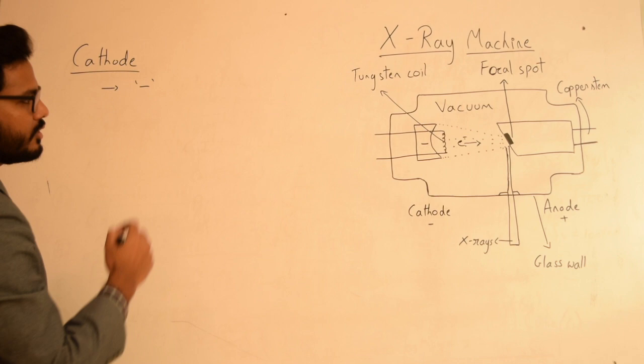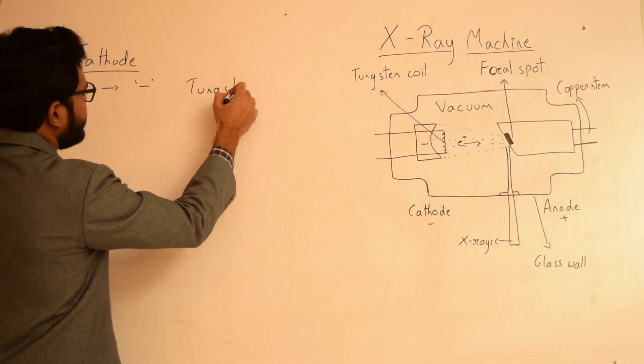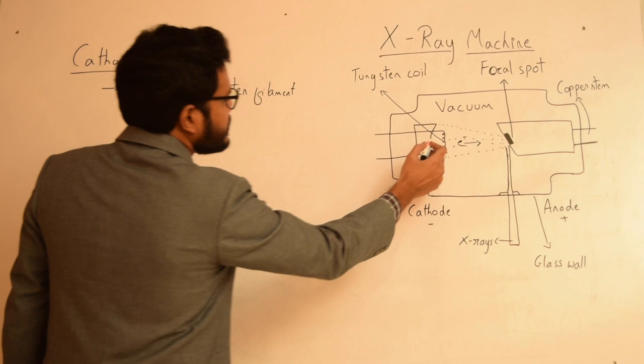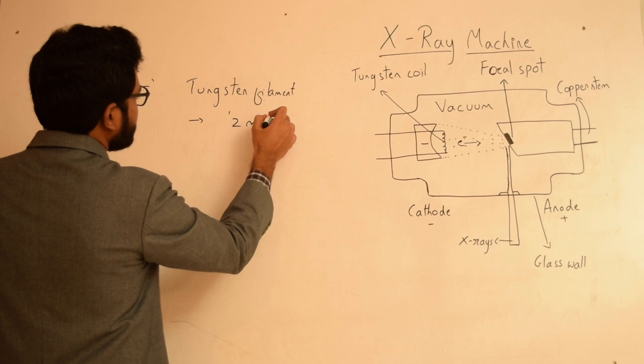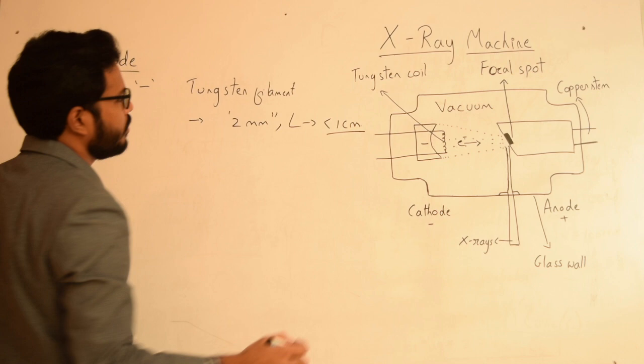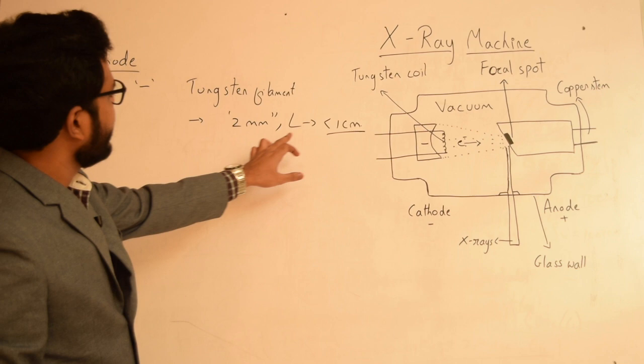As you can see in this schematic diagram, this is the tungsten filament which serves as the cathode. This tungsten filament has specific dimensions: the diameter is 2 mm, whereas the length is less than 1 centimeter. This is very important — the tungsten filament serving as cathode has a length of less than 1 centimeter and a diameter of around 2 mm.